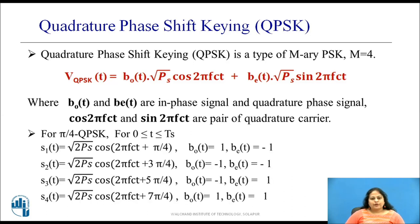For a pi by 4 QPSK for one symbol duration the signal representation for all the four symbols is as shown.